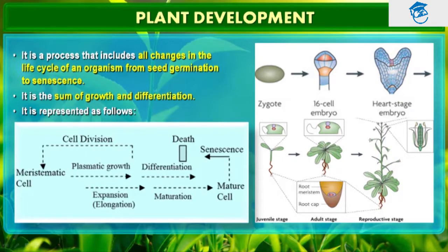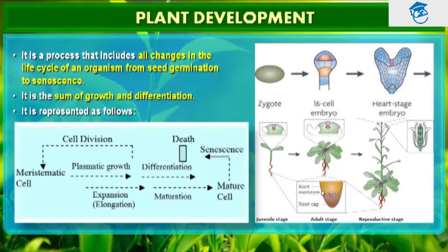It finally forms two cotyledons. This is the juvenile stage. This is the adult stage where we can easily see the root apex and the shoot apex. The root meristem keeps on dividing and the root cap prevents the root from damage. This is the reproductive stage — the third stage — where reproductive organs are produced so that flower and fruit can be formed.